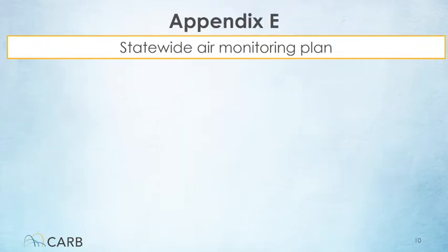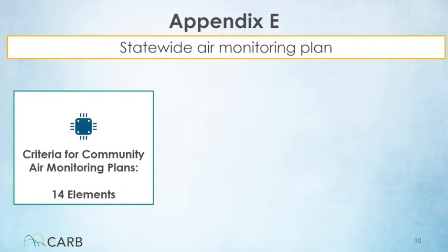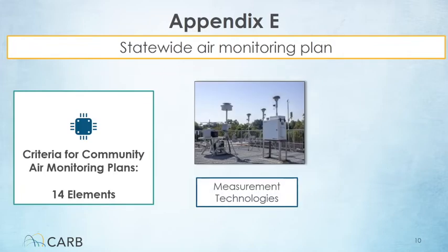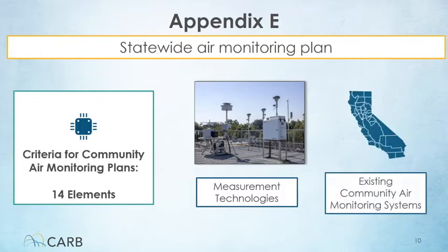Appendix E is the statewide monitoring plan, which covers the 14 required elements for developing local plans to measure air pollution. These elements cover the reason for conducting existing community air monitoring, how the monitoring will be conducted, and how the data will be used to take action. Appendix E also addresses different measurement technologies and existing community air monitoring systems.